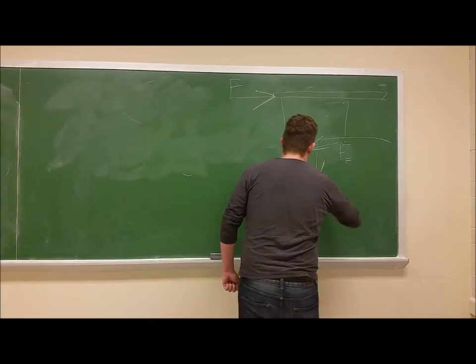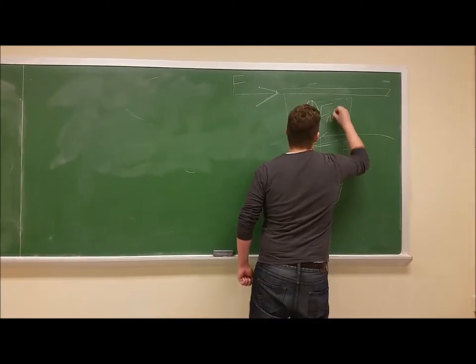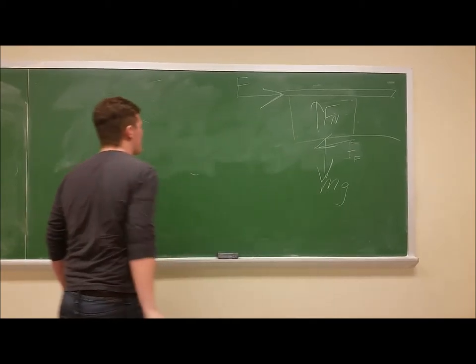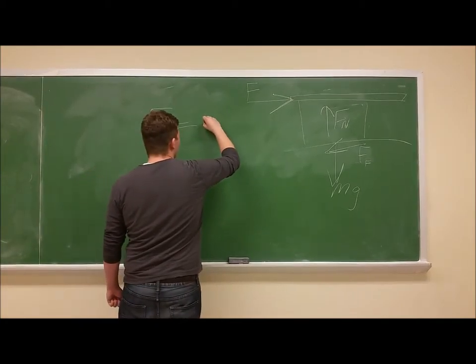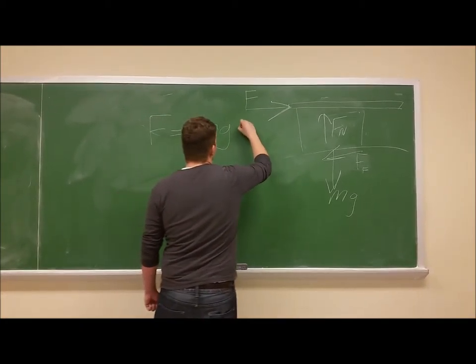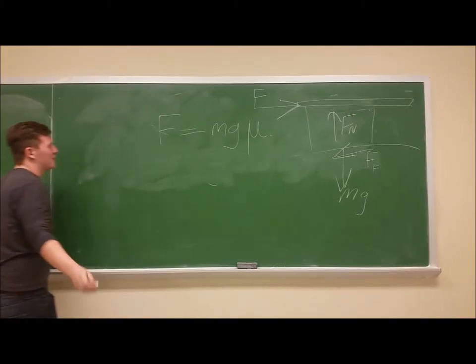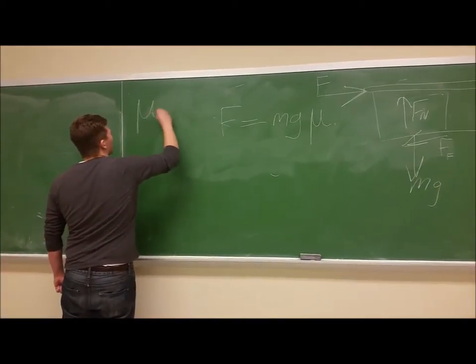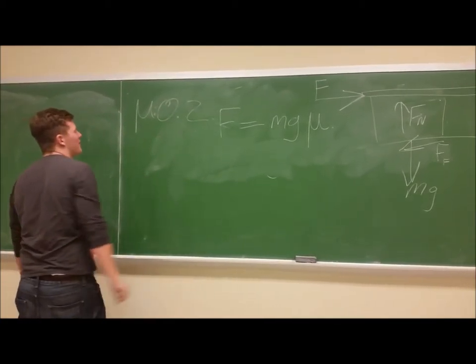Now there are also other forces at play that don't really matter here, but what we're really worried about is that friction force which is equal to the normal force exerted by the ground on the table times the coefficient of friction. And the coefficient of friction on a floor like this is somewhere around 0.2.